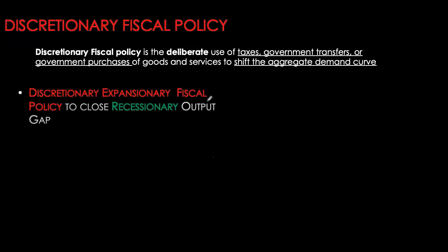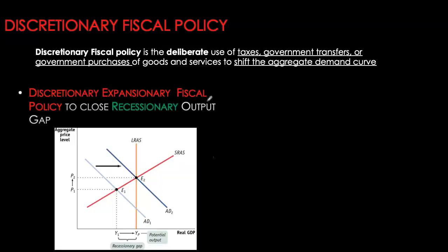For example, if we have a recessionary output gap, in this diagram we are initially at E1, and at E1 we can see output is a lot lower than our potential level of GDP. In order to close the gap, we can use expansionary fiscal policy, which would be an increase in government spending, an increase in transfers, or a decrease in taxes.